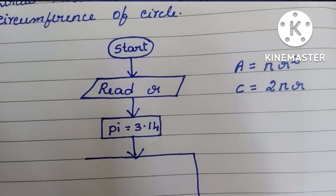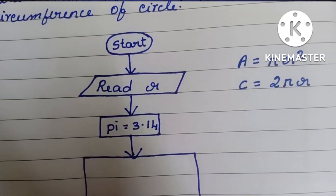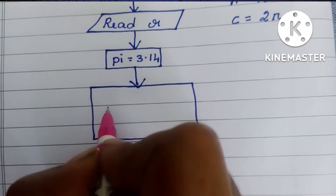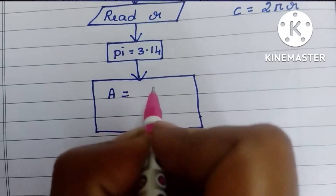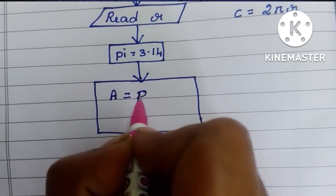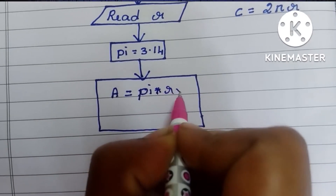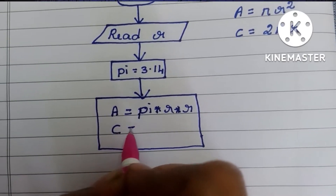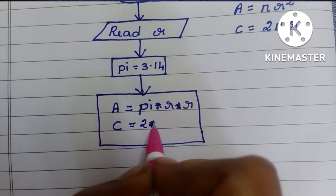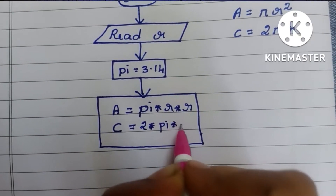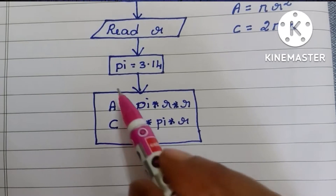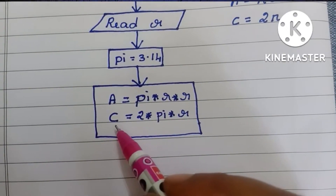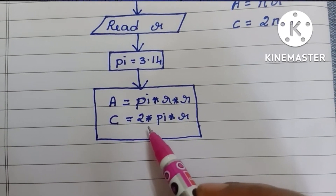In a flowchart, a process is always written within a rectangular shape. So we draw a rectangle and write the formula: A = pi × r × r. Next, for the circumference of the circle, C = 2 × pi × r. These calculations are written within the rectangular process shape.